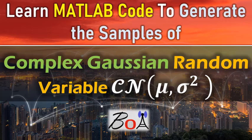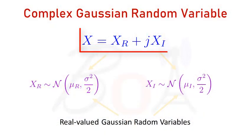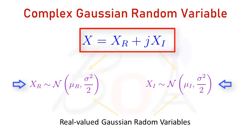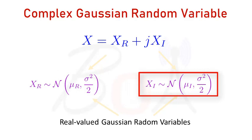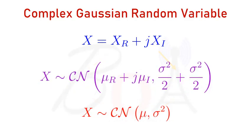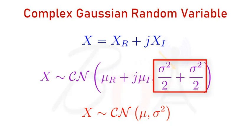In this video, you will learn to generate samples of a complex Gaussian random variable X. A complex Gaussian random variable X is a bivariate Gaussian random variable composed of two independent real Gaussian random variables Xr and Xi. Let random variable Xr have mean muR and variance sigma squared by 2, and random variable Xi have mean muI and variance sigma squared by 2. Then the mean of random variable X will be mu equal to muR plus j*muI, and its variance will be sigma squared by 2 plus sigma squared by 2, equal to sigma squared.